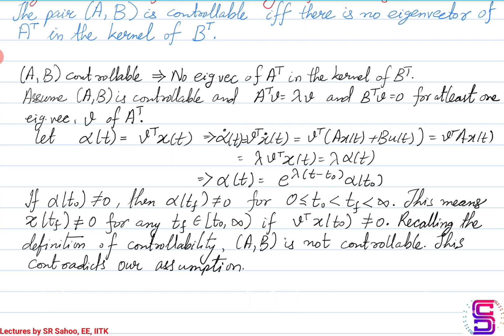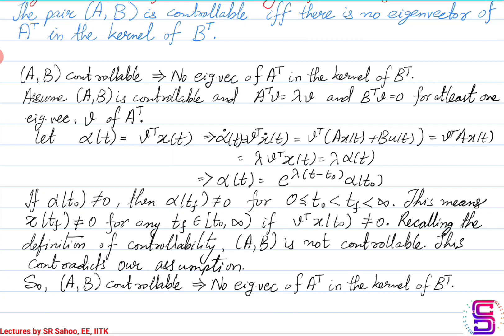By the definition of controllability, starting from an initial state, there must exist a control input that drives the state to 0 at some finite tf. However, we have shown that x(tf) cannot be 0 for any finite tf due to the existence of an eigenvector of A^T in the kernel of B^T. This contradicts the assumption that (A, B) is controllable, establishing the forward direction.